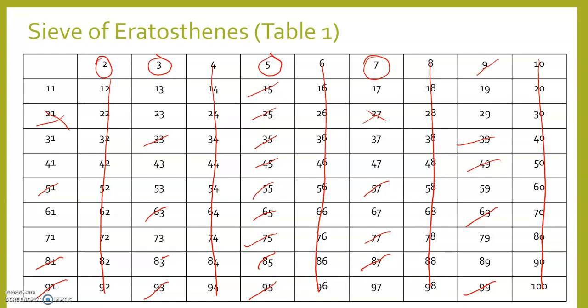We've got 11 done. 13 will be 26, 39, 52, 65, 78, 91. Done. What we are left with are our prime numbers.